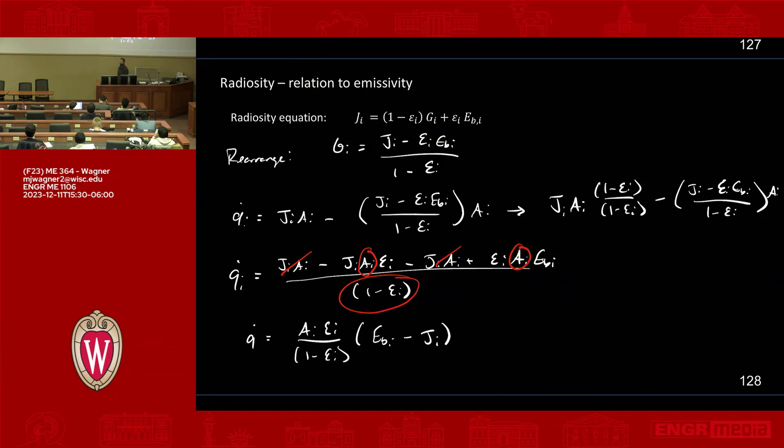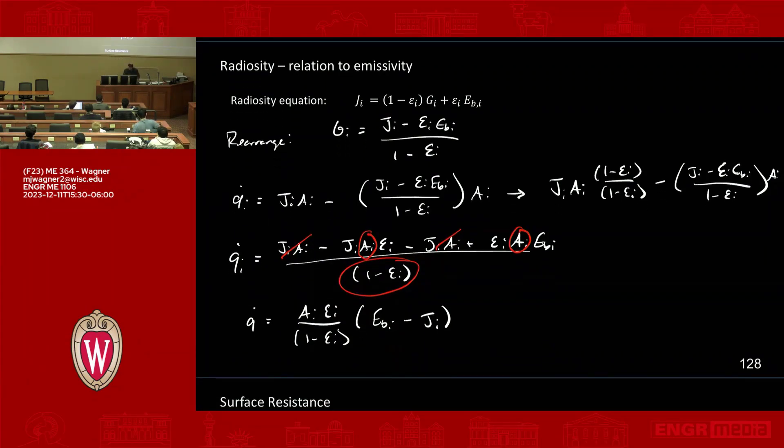So it's maybe not clear how physically this all relates. First of all, black body emissive power is kind of a squishy concept. The radiosity is even worse, like understanding what that stuff physically means is kind of difficult. So you have to stick with the process to kind of see how it goes through. But let's maybe parse this a little bit further. Because what you're going to get out of this is kind of a methodology you can use to evaluate these problems.